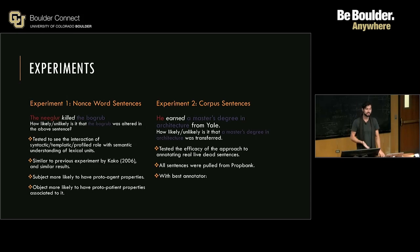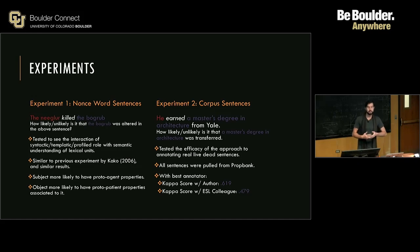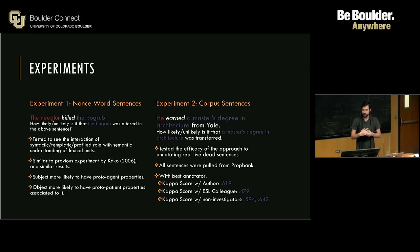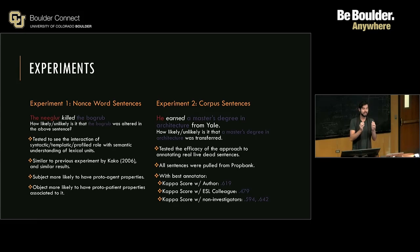Some of the results with the best annotator from this study: they had a Kappa score — which is the measurement of agreement between annotators in a corpus — with one of the authors of the paper of .619, which is insanely high. They had a Kappa score with one of their English as a second language colleagues of .479, which is really, really high. And then Kappa scores with some non-investigators in the department of .594 and .642. This indicates that the methodology for annotation was good enough to get high inter-annotator agreement between the Mechanical Turk annotators and actual professional linguists. It was effective.